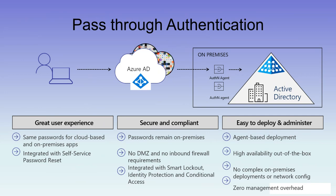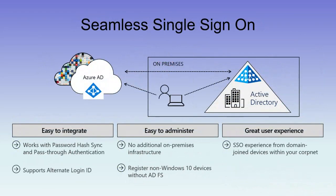Some of the write-backs and other services do require the premium licence, which you get with the E3 and E5 SKUs of Microsoft 365. Seamless single sign-on allows a user on-premises to sign in to his on-premises environment with his on-premises ID and he is also then automatically signed in to his cloud services as well, without having to enter passwords and usernames in his web services.